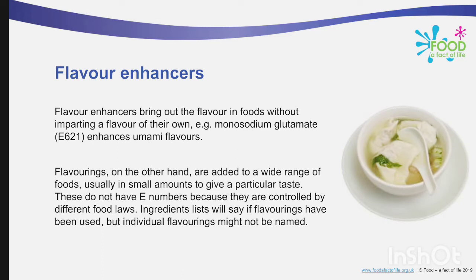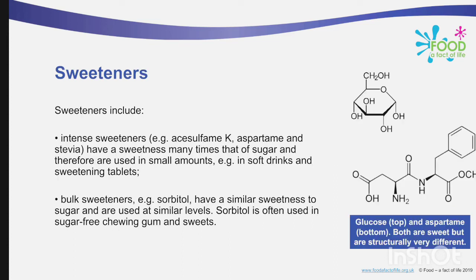Flavor enhancers bring out the flavor in food without imparting a flavor of their own. For example, monosodium glutamate, also called MSG with European code E621, enhances umami flavor. Flavorings, on the other hand, are added to a wide range of foods usually in small amounts to give a particular taste. These do not have European numbers because they are controlled by different food laws. The ingredients list will say if flavorings have been used, but individual flavorings might not be named.